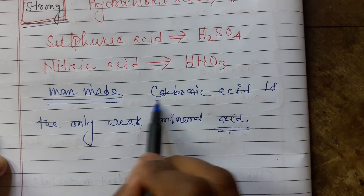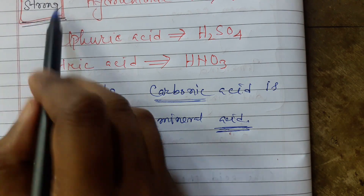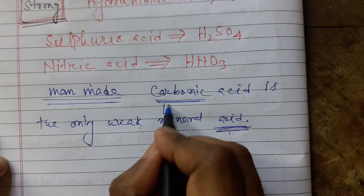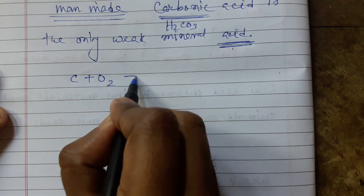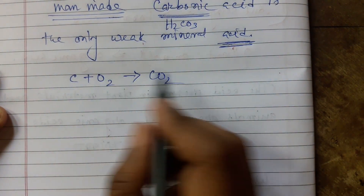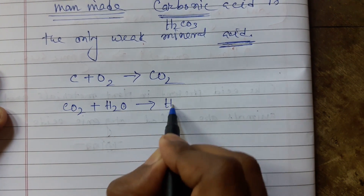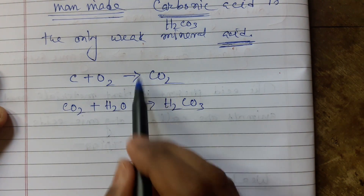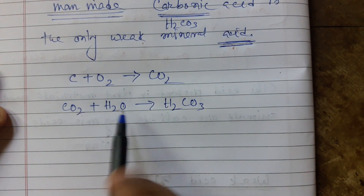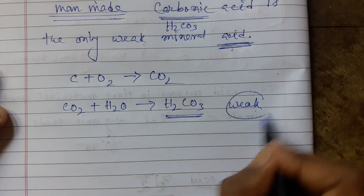Carbonic acid is carbonic acid. In this case, the carbonic acid — H2CO3 — is carbonic acid. Carbon and oxygen form carbon dioxide. So carbon dioxide and water form carbonic acid, but in a few years there is carbon dioxide. This is the only weak mineral acid.